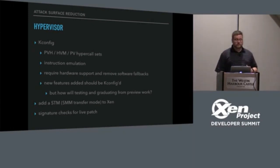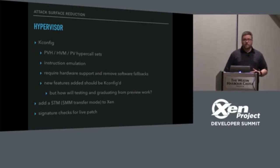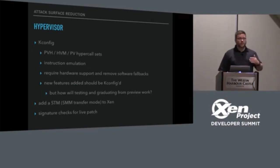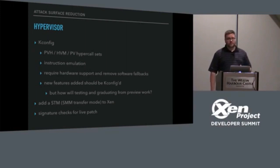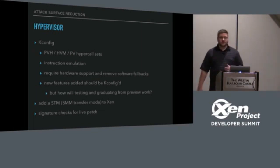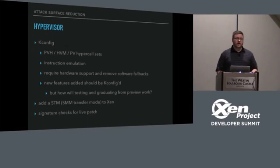Another thing we can do is remove some of the automatic software fallbacks. We've kconfigged out shadow paging, which is going to require that you have EPT or NPT. There are further bits that can be done — for example, IOMMU, you can do something where you just have to have the IOMMU.